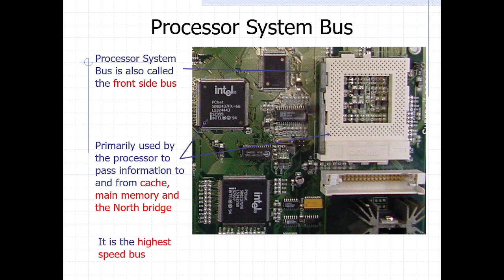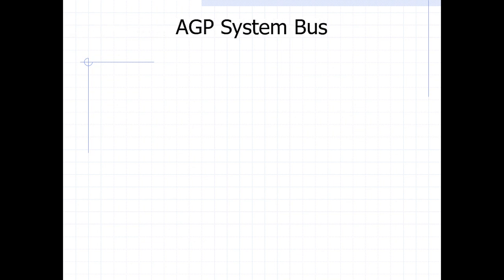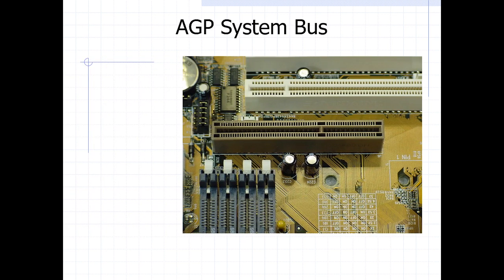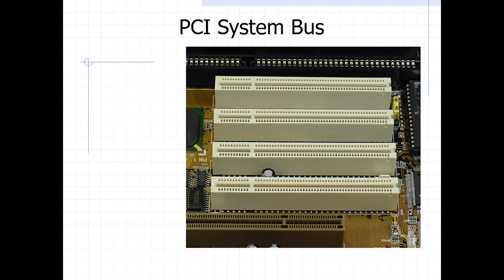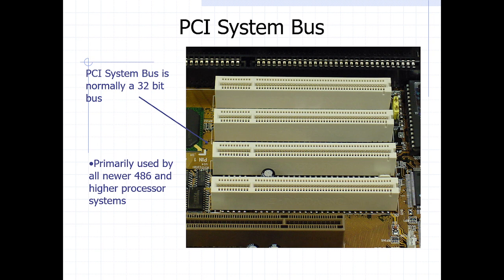This brings on board the need to have a processor system bus. The processor system bus offers high speed because of the very many coordination activities between the processor and the connected components. The AGP system bus has a distinctive brown color — it's used for video and it's connected to the North Bridge, which assists the processor in coordinating additional processing activities. The PCI system bus is normally white in color — it offers a 32-bit bus and is the newest within the computer world, offering greater speed.